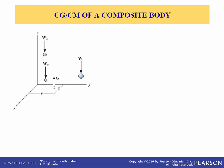Let's consider a composite body which consists of a series of bodies as shown in this figure. We've got n number of bodies, and each one has a weight and a particular location in space. We want to find out what is the center of gravity due to all of those weights. The net weight is just the summation of all the weights. We'll sum moments about the y-axis in order to get the equations we need to find the center of gravity.